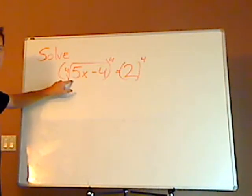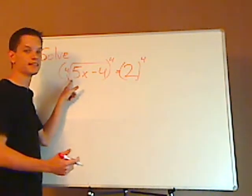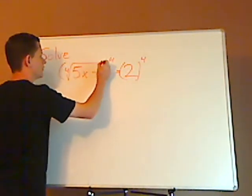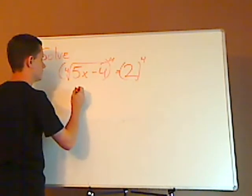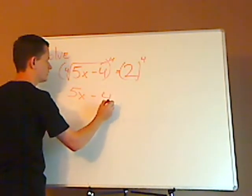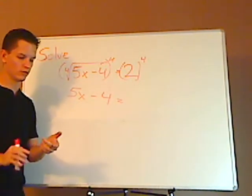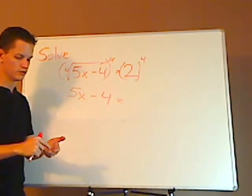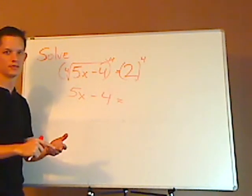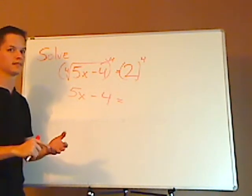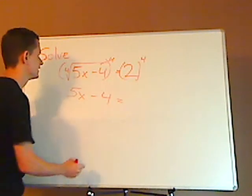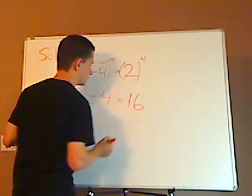Once you do that, it cancels out. The fourth root and the exponent cancel out. So that leaves you with 5x minus 4 equals, and then it's 2 raised to the fourth. Well, 2 times 2 is 4, times another 2 is 8, times 2 is 16. So 2 to the fourth would be 16.